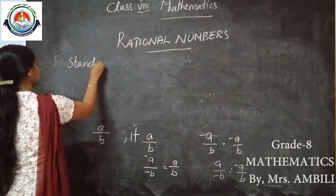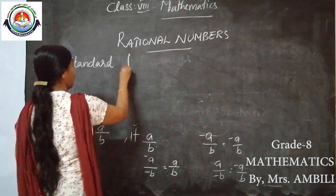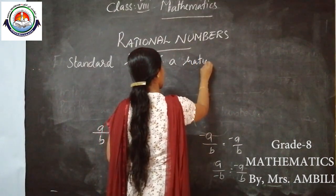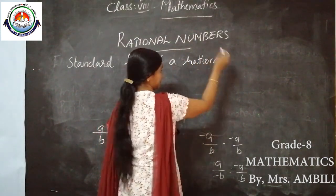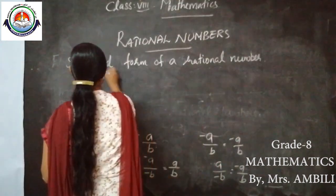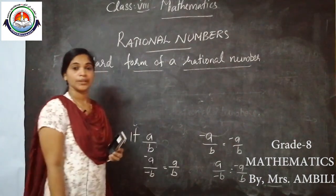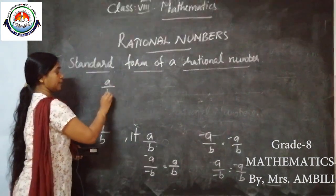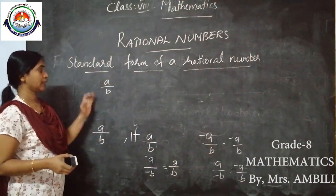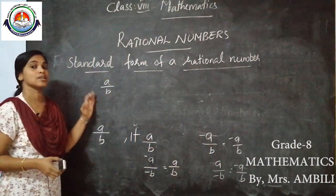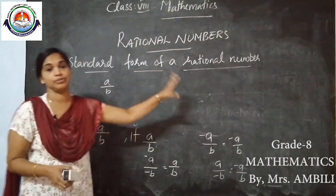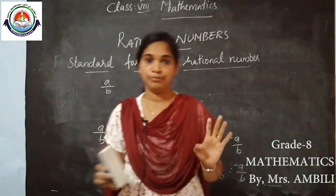Our third topic: standard form of a rational number. We are taking an example: A/B is a rational number. If A/B is in its lowest form and B is a positive number, then it is in standard form.